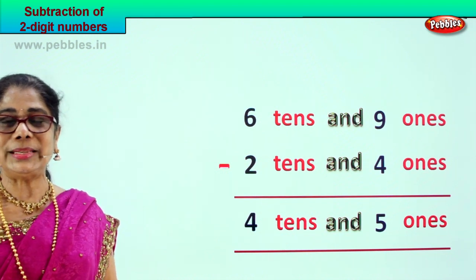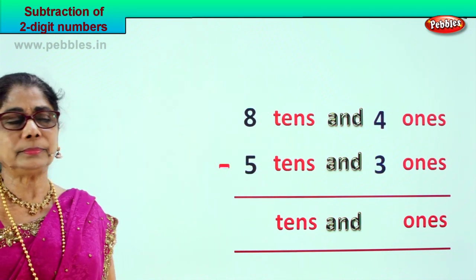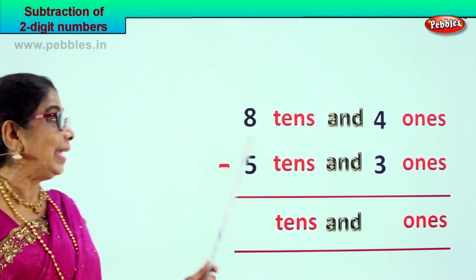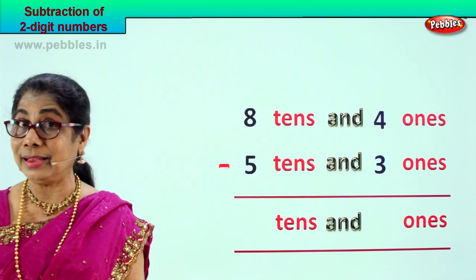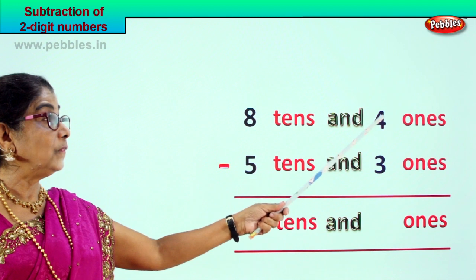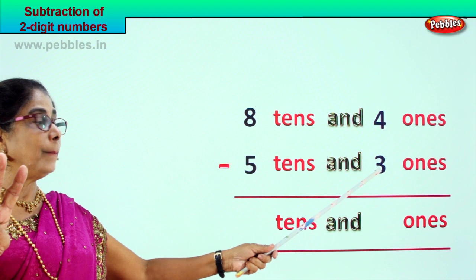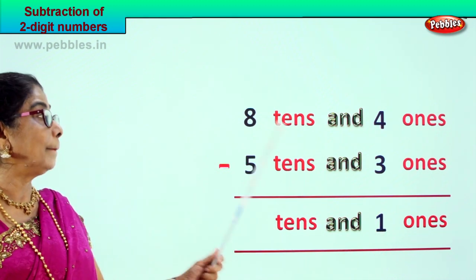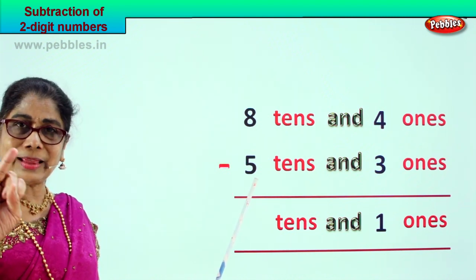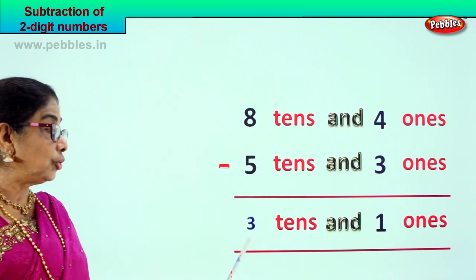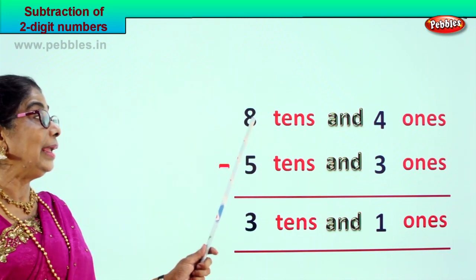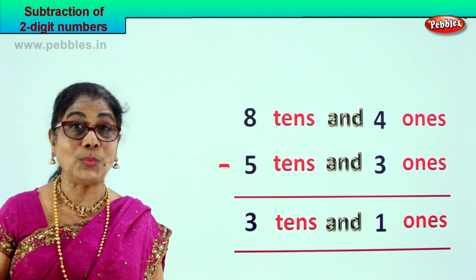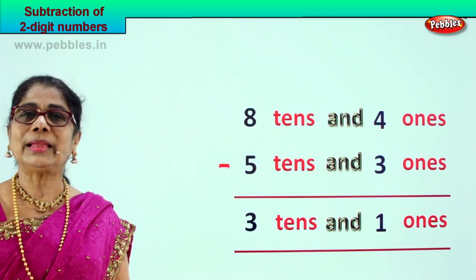Did you enjoy the 2 digit subtraction? Shall we take a new sum? 8 tens and 4 ones minus 5 tens and 3 ones. 84 minus 53. Let's find the answer together. Ones first: 4 ones minus 3 ones — 4 take away 3 is 1. Tens: 8 minus 5 — 8 minus 5 is 3. Your answer is 3 tens and 1 one. 8 tens and 4 ones minus 5 tens and 3 ones gives you 3 tens and 1 one. Did you enjoy the 2 digit subtraction? Let's go to a new sum.